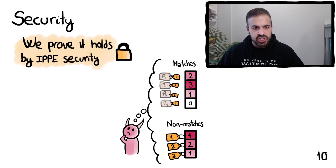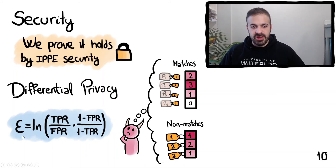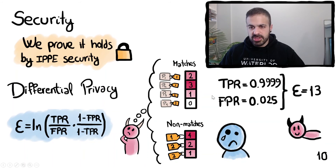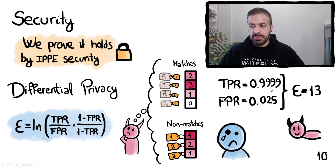We also perform a differential privacy analysis and obtain an epsilon parameter where TPR is the true positive rate of document recovery and FPR is the false positive rate. However this gives epsilon values that are very large. For example for certain values of true positive rate and false positive rate we get an epsilon of 13. Epsilon of 13 means very low privacy in terms of differential privacy. However we will see in the experiments that even with these values our scheme is very strong against current attacks. This doesn't mean that epsilon 13 is acceptable, but simply that differential privacy might not be an adequate privacy metric for this problem.